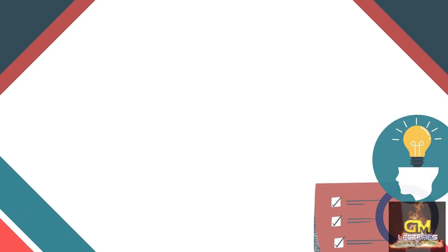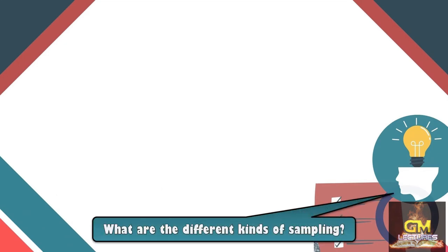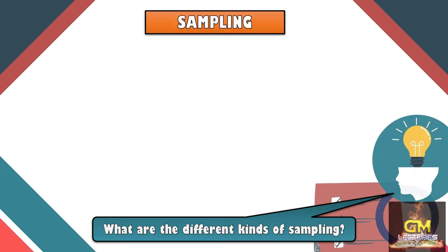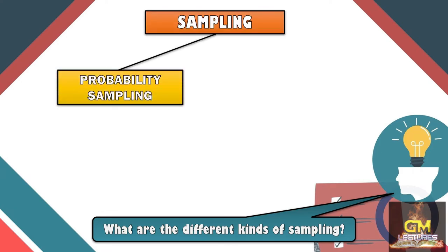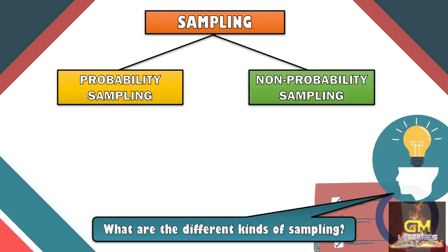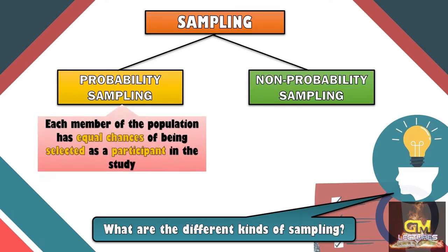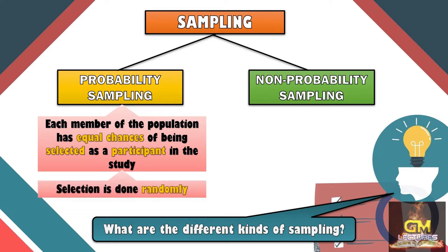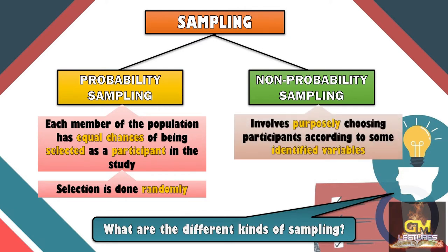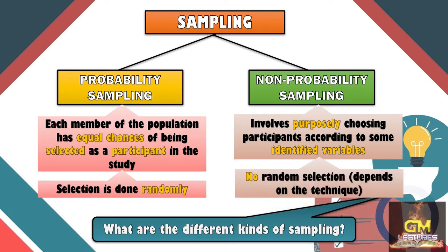Now, we're going to answer the question: what are the different kinds of sampling? Sampling can be classified into two types. First, we have probability sampling, and the other is non-probability sampling. In probability sampling, each member of the population has equal chances of being selected as a participant — meaning the selection is done randomly, so everyone has equal opportunities to become selected. Whereas in non-probability sampling, it involves purposely choosing the participants according to some identified variables, so there is no random selection depending on the kind of technique used.